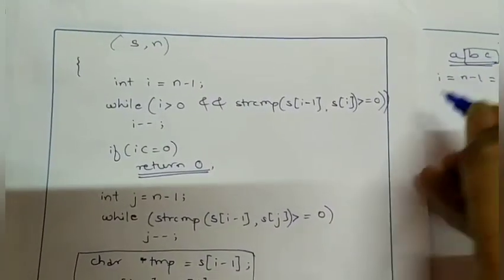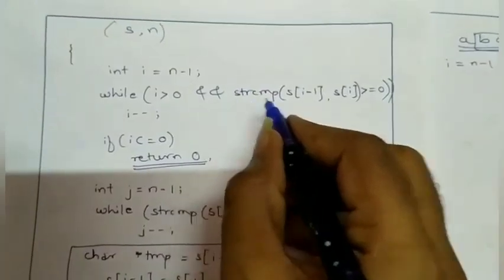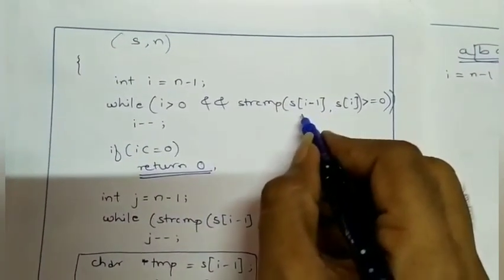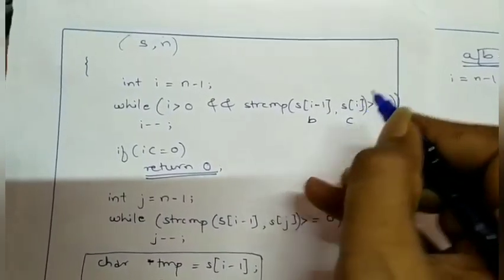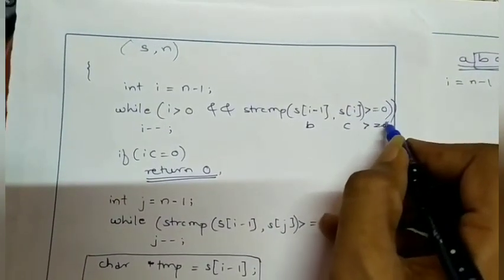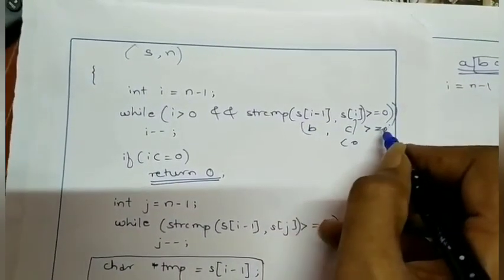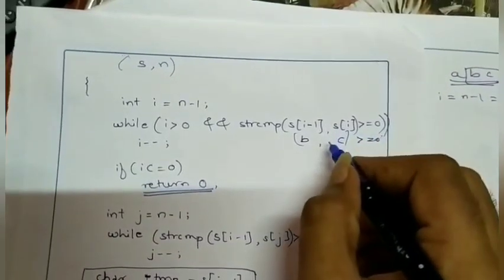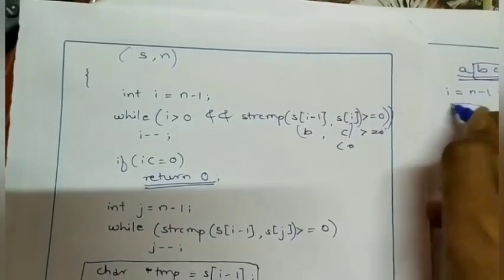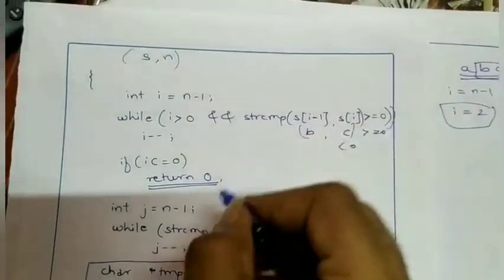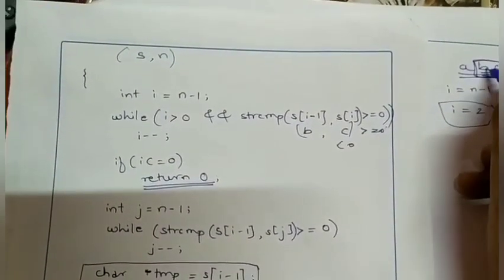The while loop runs while i is greater than zero and str_compare of s[i-1] and s[i] is greater than zero. Here s[i-1] is b and s[i] is c. str_compare gives less than zero, so the while loop stops immediately. i does not decrement, so i remains equal to 2.